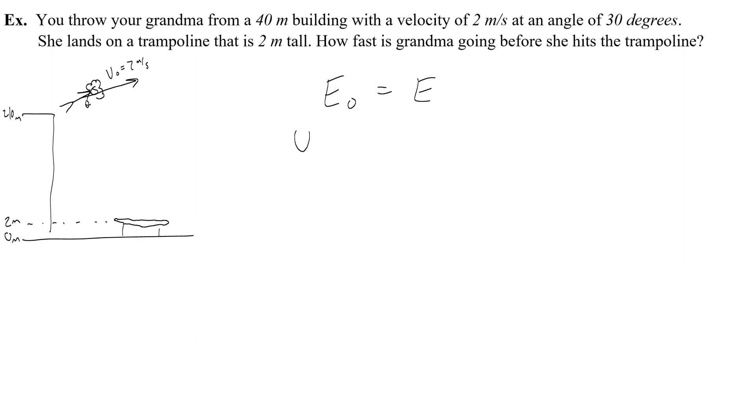I have potential energy UG because she's at a height of 40 meters, and also there will be some kinetic energy because grandma was thrown with a velocity of 2 meters per second in the beginning, so I'll call that K₀. At the end, grandma is obviously going to have some kinetic energy, but because she's at a height of 2 meters, she will also have some potential energy.